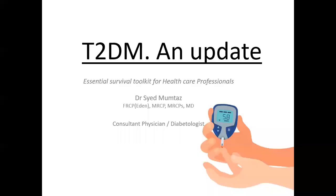Type 2 diabetes mellitus is a chronic progressive metabolic condition due to hyperglycemia. By the time it is diagnosed, almost 50% of patients are already having some sort of diabetes-related complication. The main aim of treatment is to prevent the development of diabetes-related complications and provide patients a better lifestyle and quality of life.